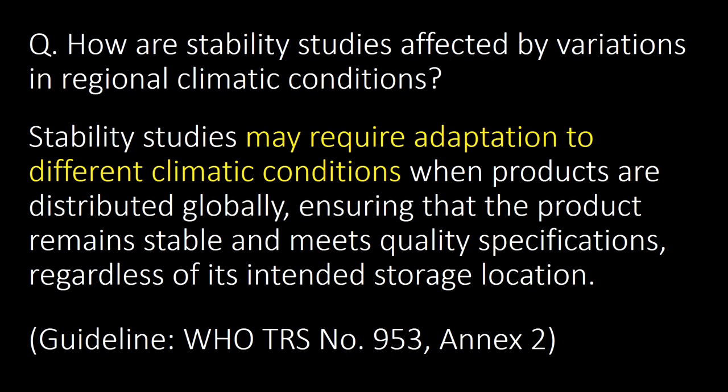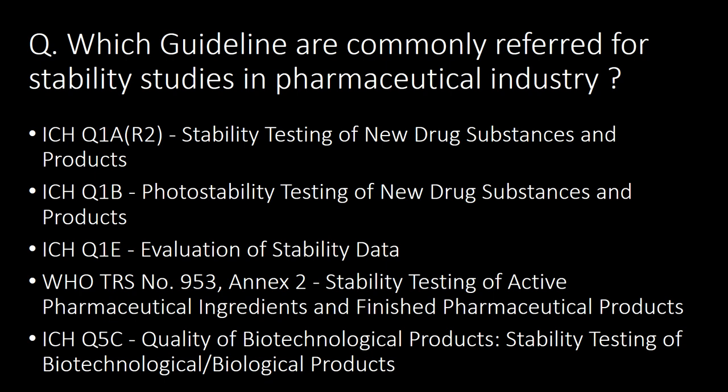Last and very important question: which guidelines are commonly referred to for stability studies in the pharmaceutical industry? The five guidelines commonly referred to for stability studies in the pharma industry are ICH Q1A R2, ICH Q1B, ICH Q1E, WHO TRS 953 Annex-2, and ICH Q5C.